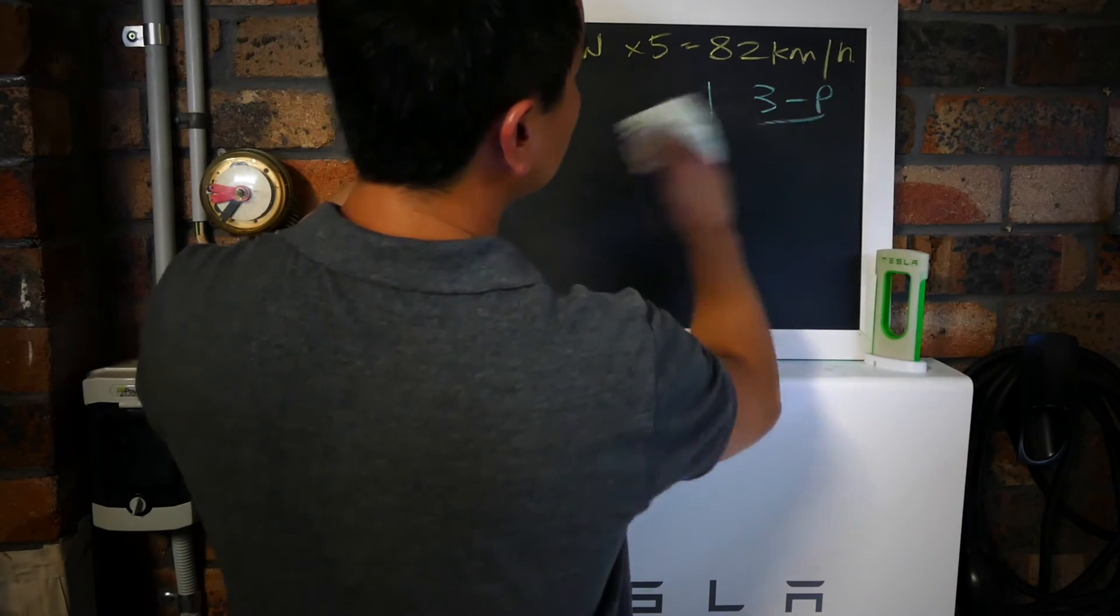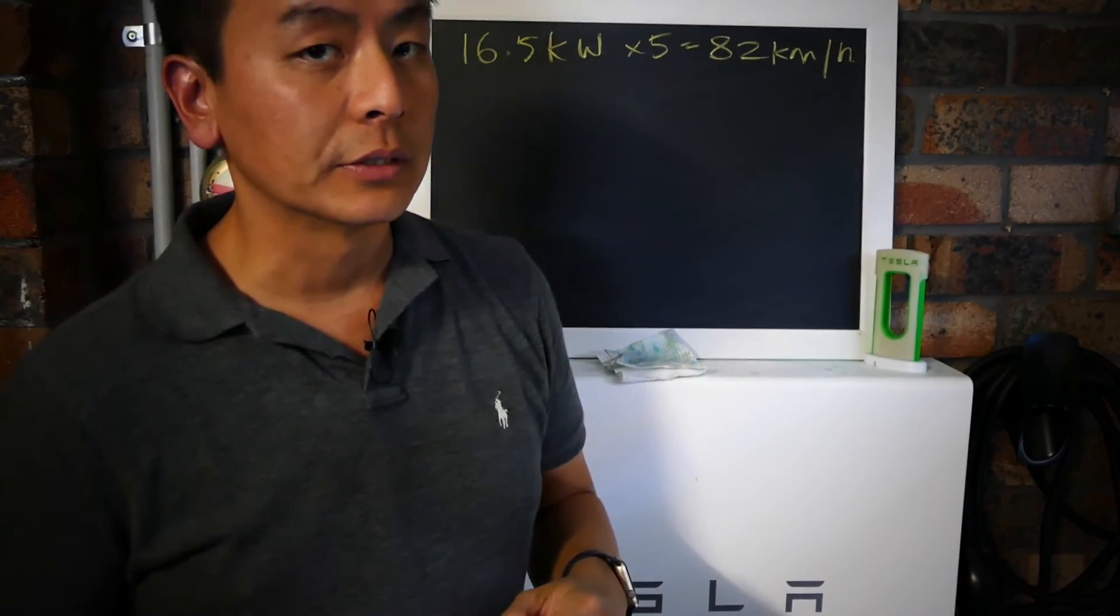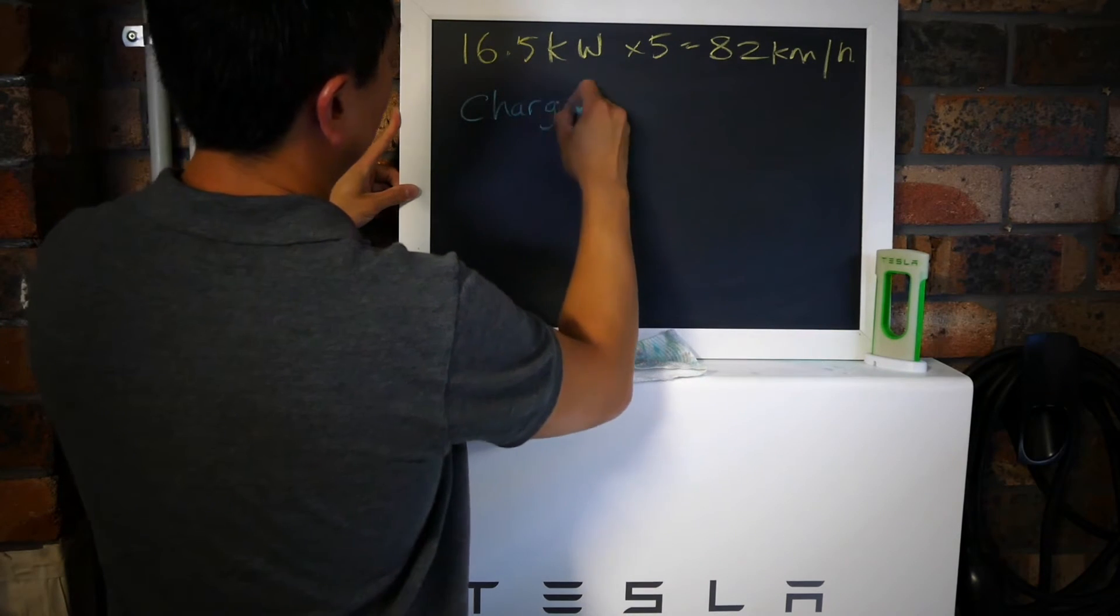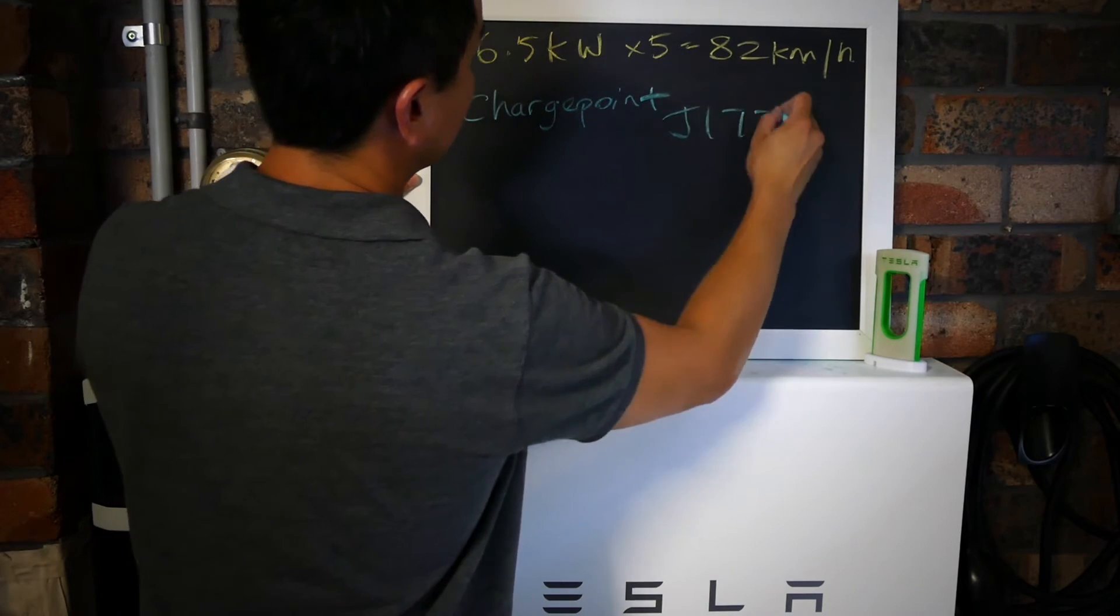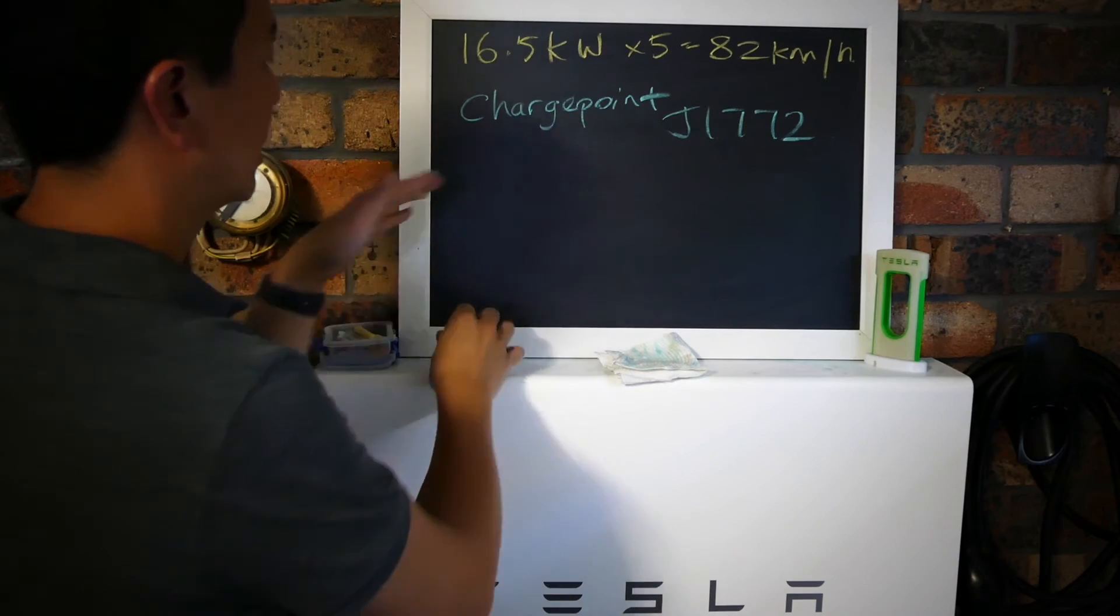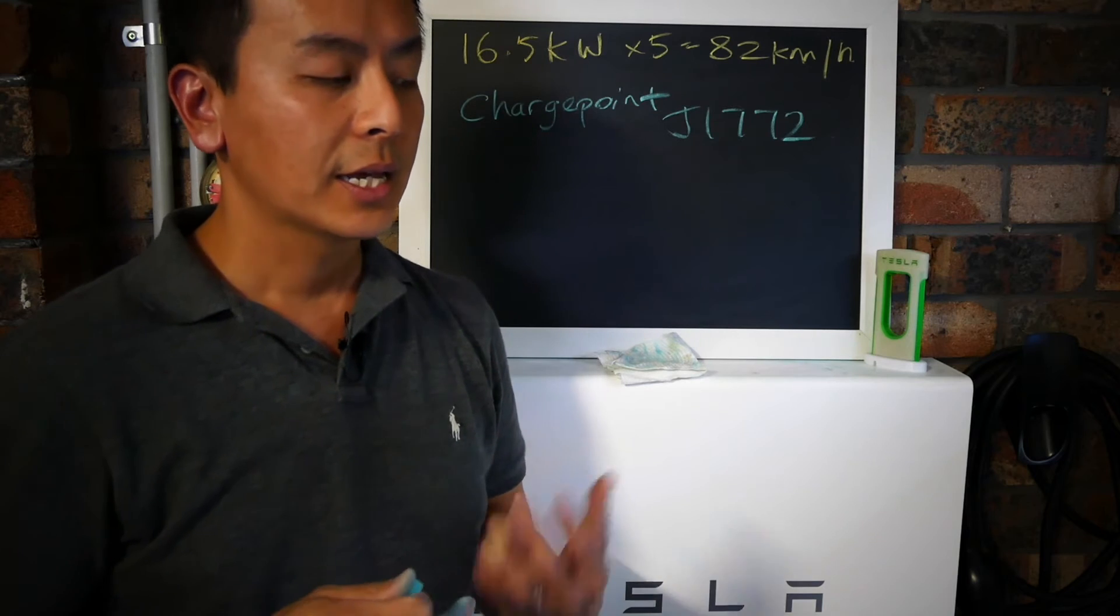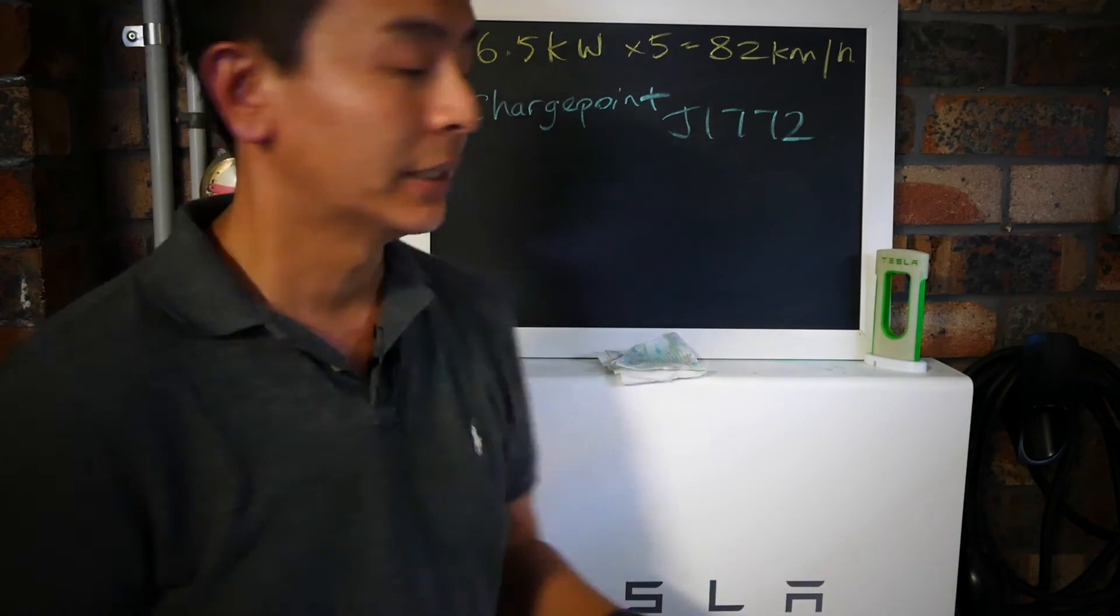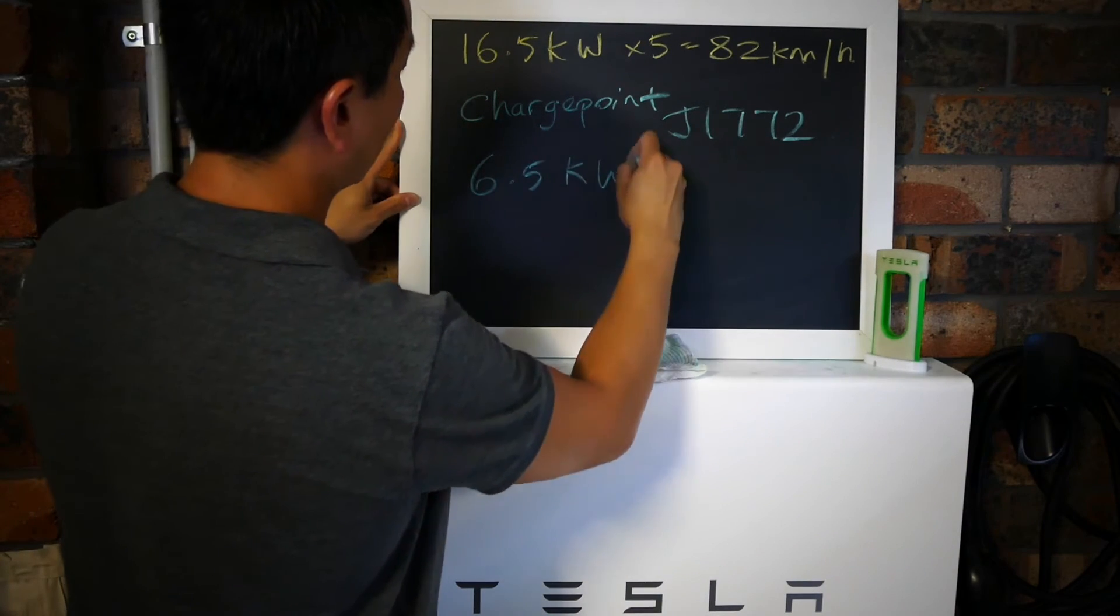There are a couple other options. Some shopping centers are now equipped with ChargePoint chargers. This uses the J1772 port. To use these ChargePoint charging stations, which are free by the way, and to sign up is actually free as well, so you might as well sign up and get it.